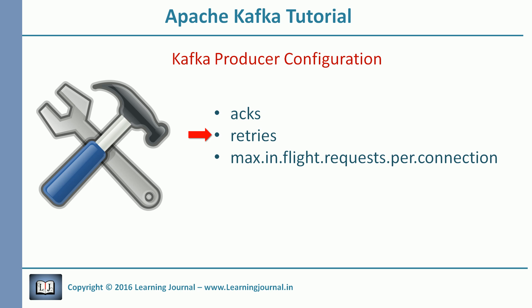The next parameter, retries, is a simple one. It defines how many times the producer will retry after getting an error. The default value is 0. There is another parameter, retry.backoff.ms, that controls the time between two retries. The default value for this parameter is 100 milliseconds.